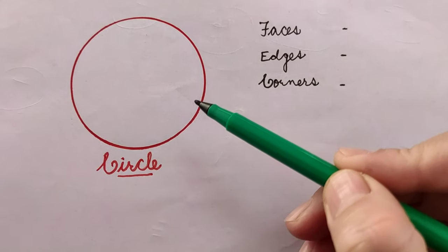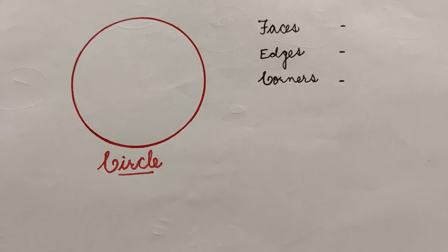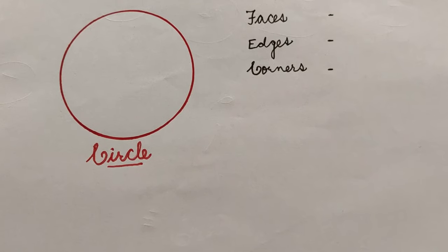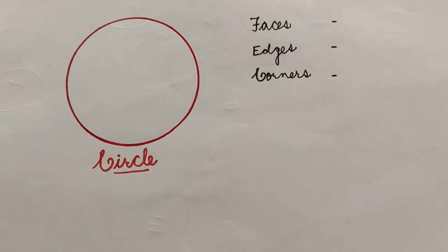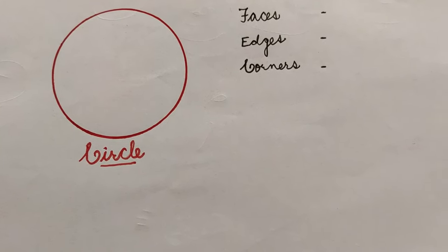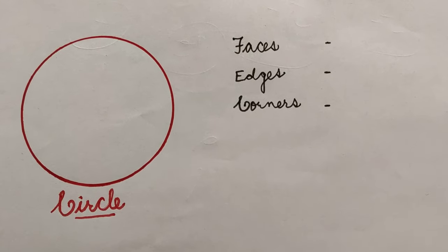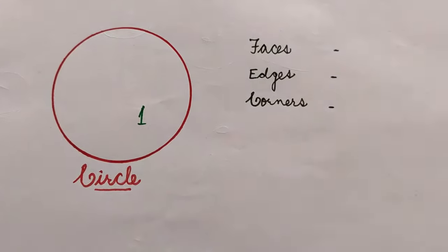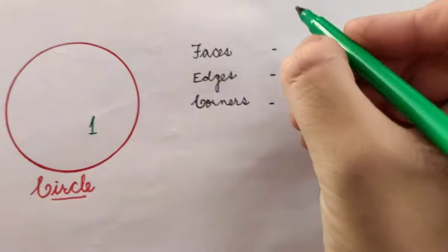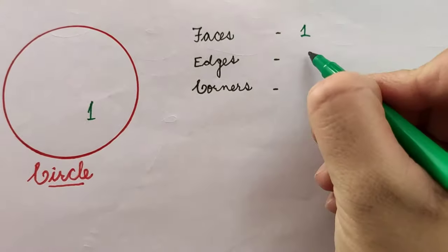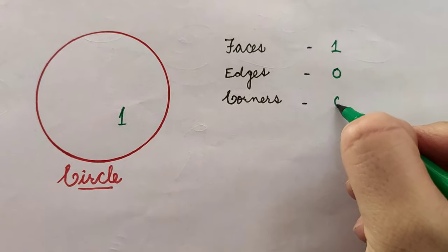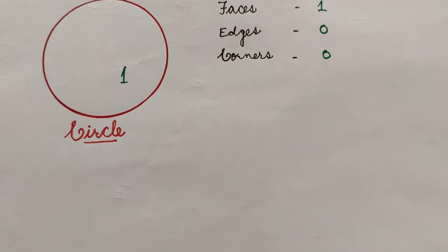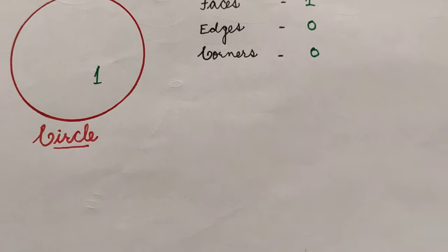Now let's look at the circle and write how many faces, edges, and corners it has. This circle is made with a curved line. A circle has only one face — the whole front you see is its face. How many edges does a circle have? No edges, because it is made with a curved line and there is no straight line. And corners? Zero corners as well. So circle has one face, zero edges, and zero corners.